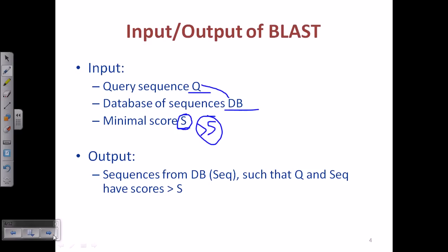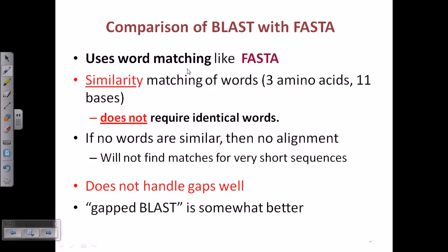Comparing BLAST with FASTA: BLAST uses word matching similar to FASTA. In FASTA it was 6 nucleotide bases and 2 amino acids, but in BLAST it is 11 nucleotide bases and 3 amino acids. Importantly, BLAST does not require identical words — in FASTA the search was for exact identical words, but in BLAST it searches for similar words, not necessarily identical words.